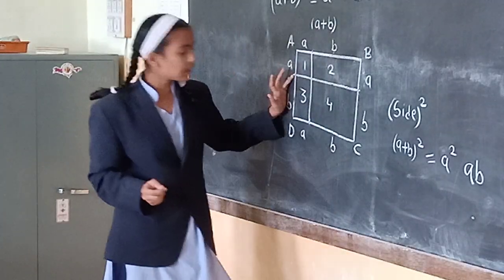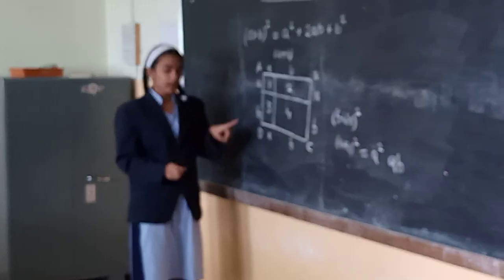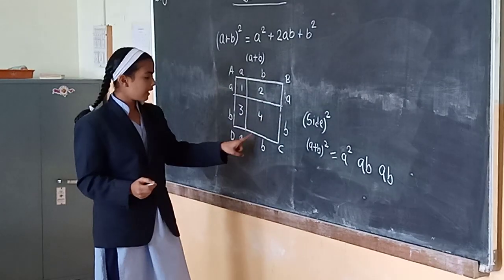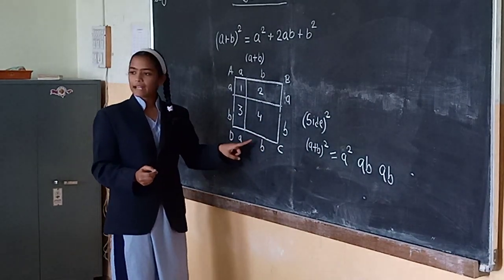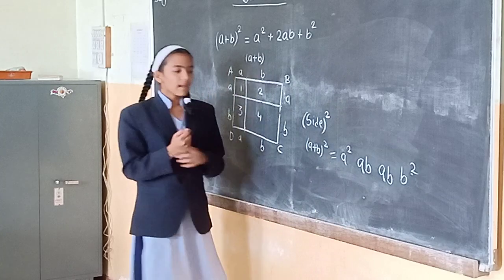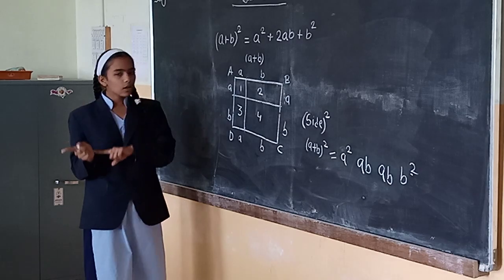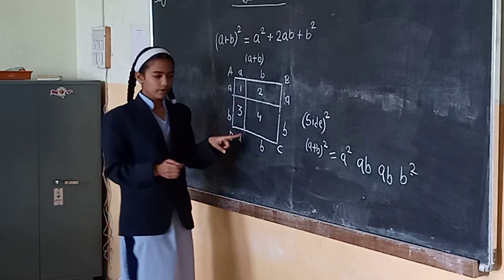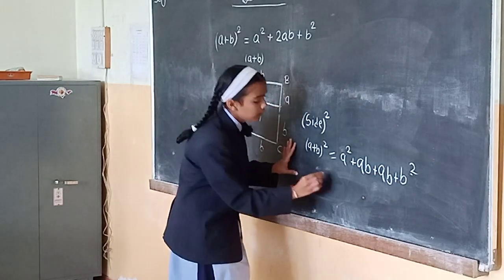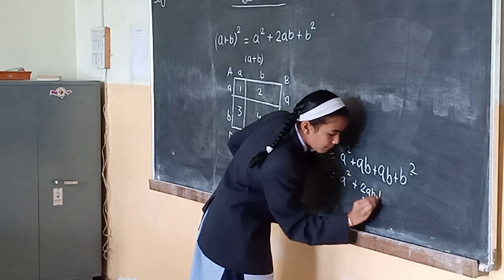Our third quadrilateral is again in the form of a rectangle — its length is b and breadth is a, so length × breadth = ab. And our fourth quadrilateral has side b and is in the form of a square, so side × side = b × b = b². Therefore, (a + b)² is equal to a² + ab + ab + b², which means a² + 2ab + b².